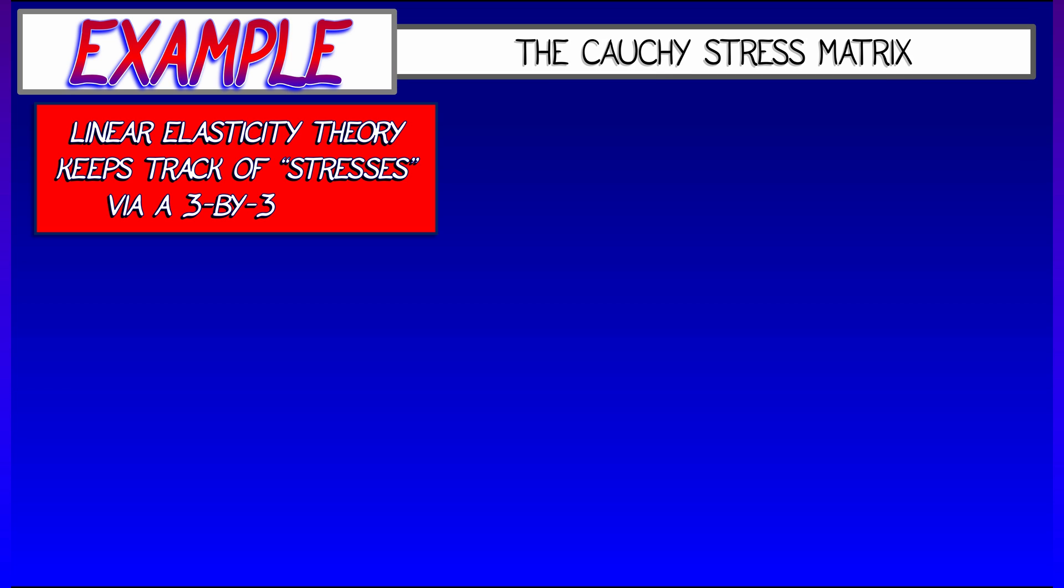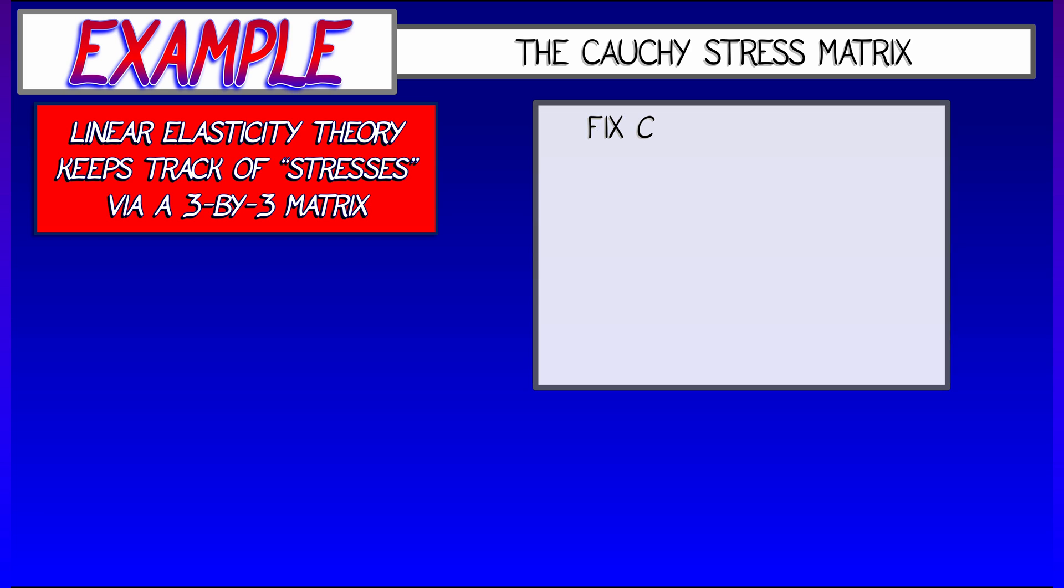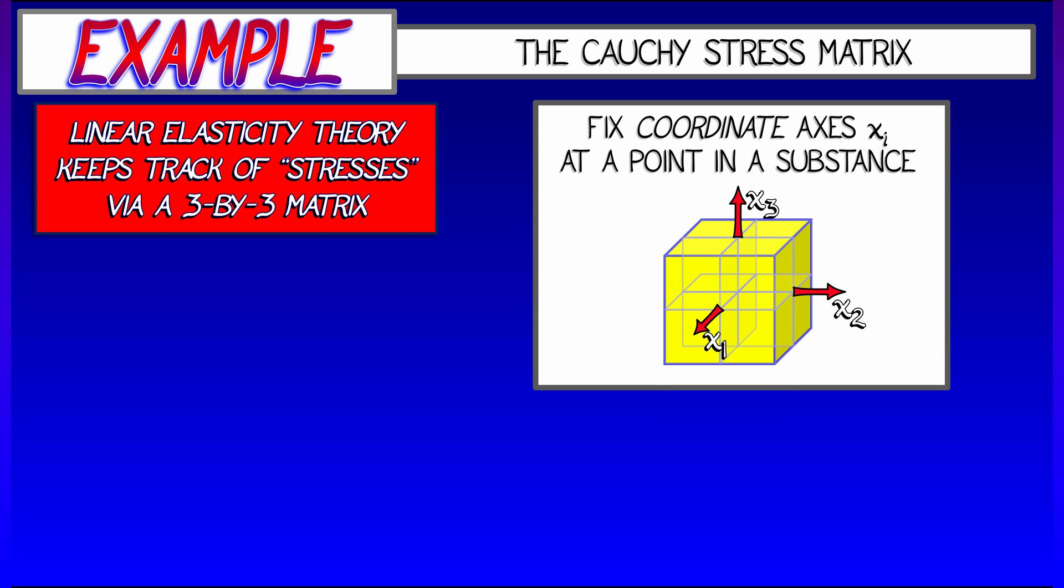One good example comes from linear elasticity theory, where one uses 3x3 matrices to keep track of stresses in a material element. To fix a coordinate frame, let's call the axes x₁, x₂, and x₃.